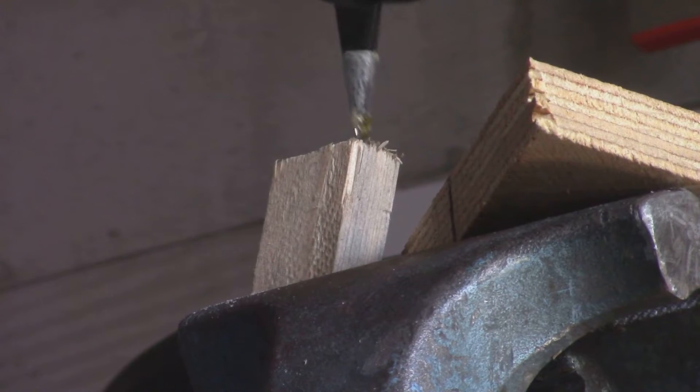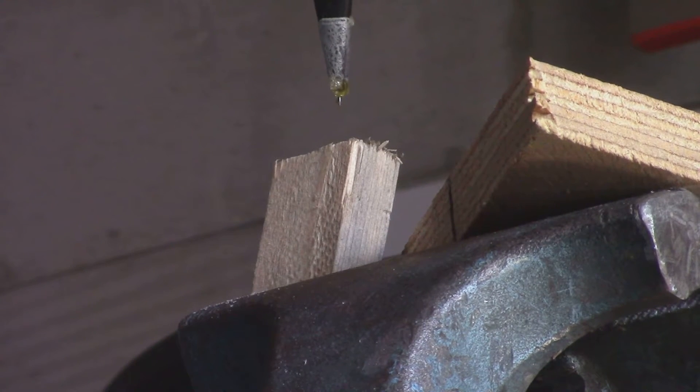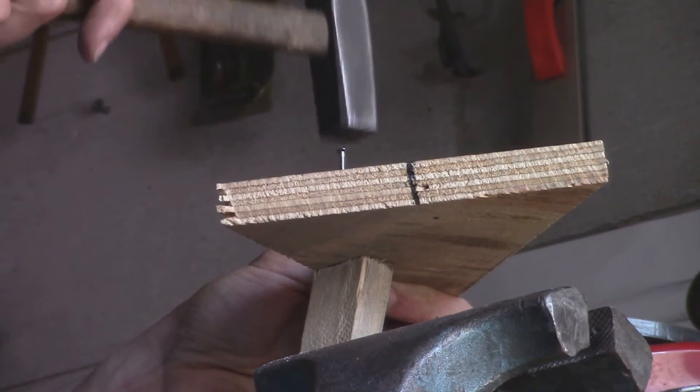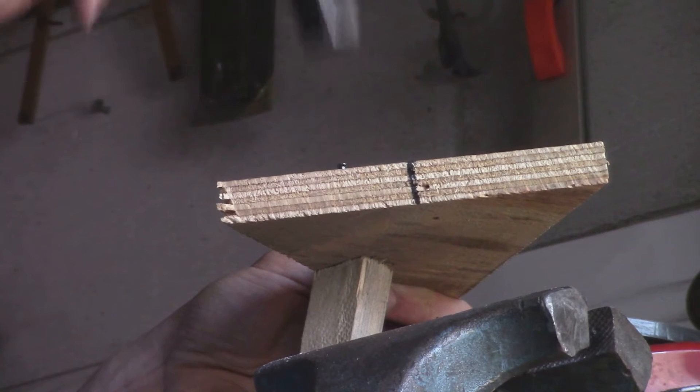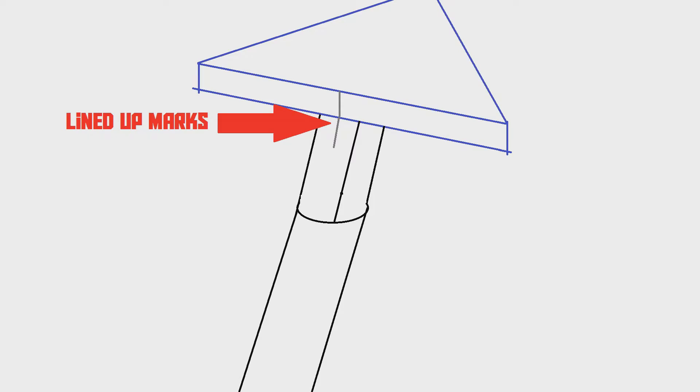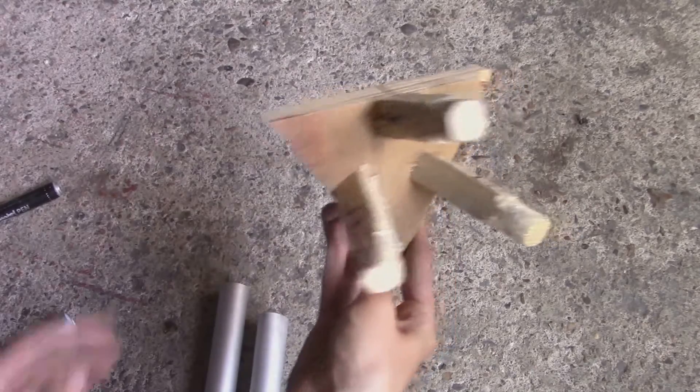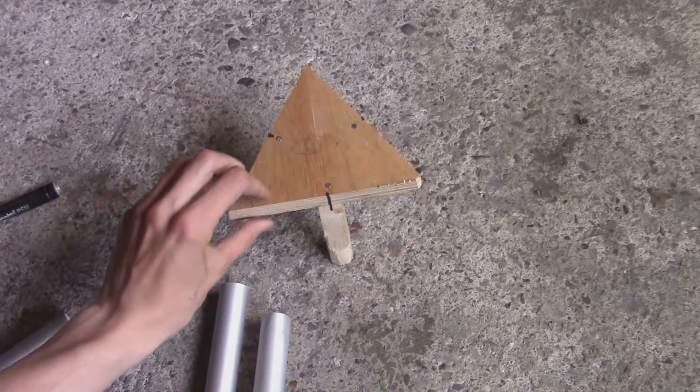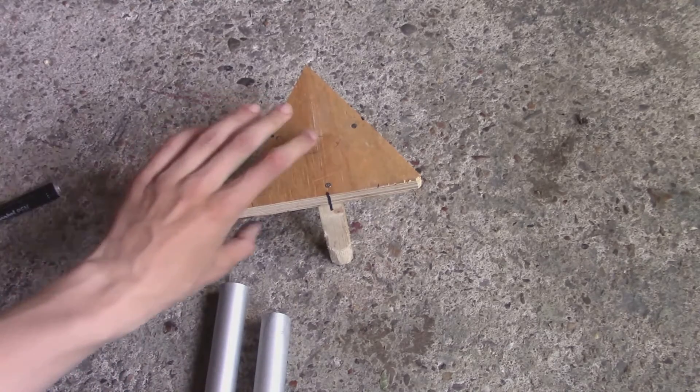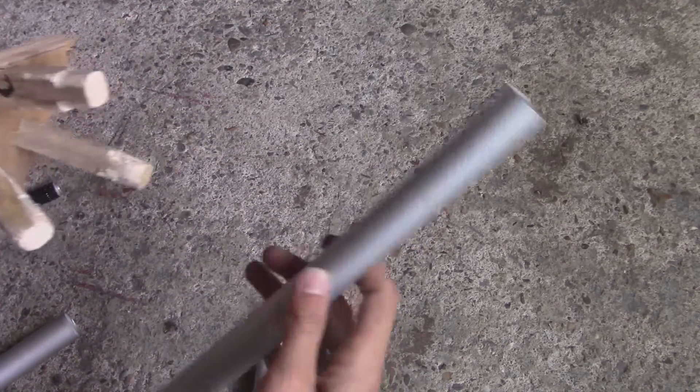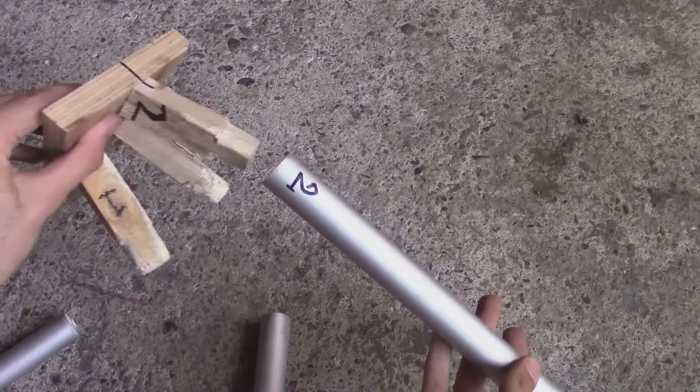Now we join the triangle and the legs together using super glue and also slap a nail in to make it extra secure. In this drawing you can see how to line up the marks. So now you've got something that looks like a very tiny tripod. Then you can reattach your legs and boom, your tripod is done.